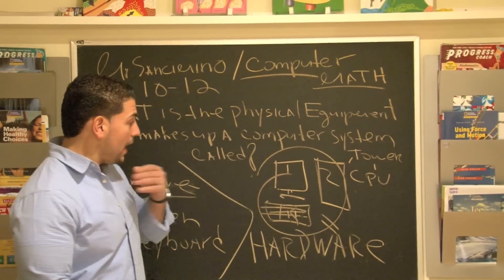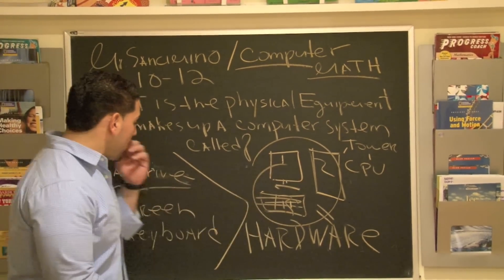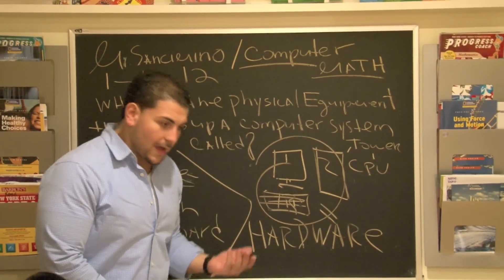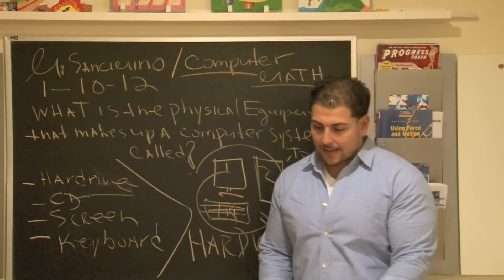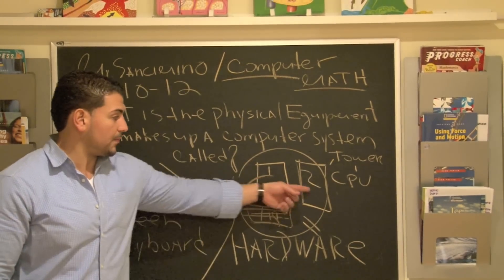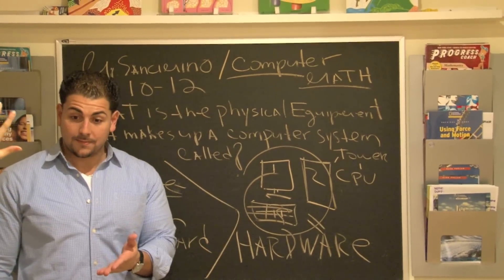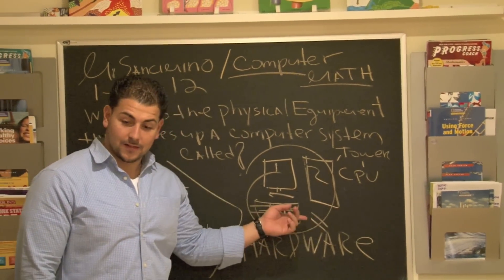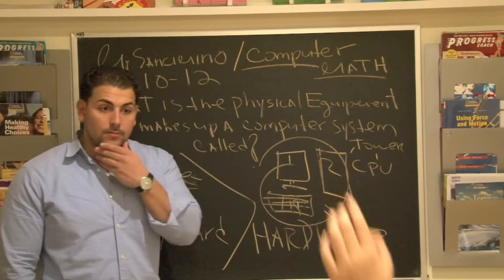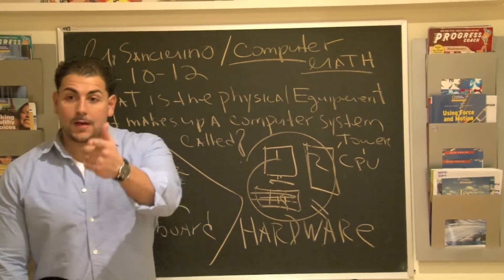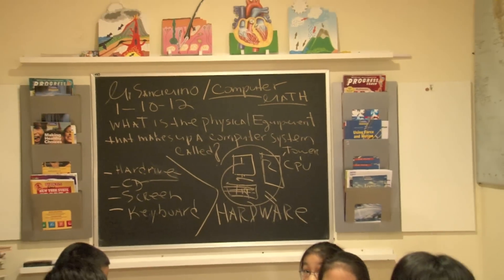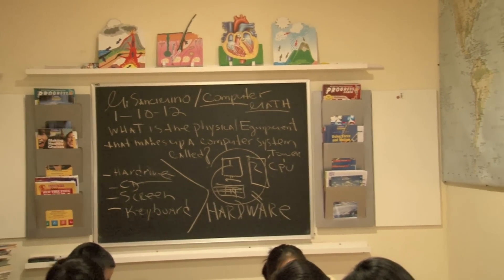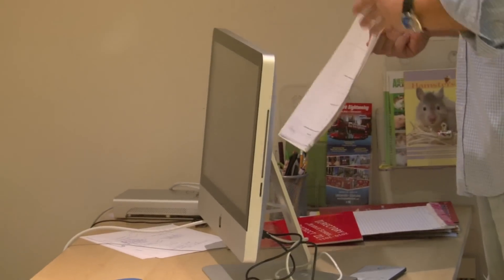So for this question: tower, screen, keyboard — all these things make up the hardware. If you take a computer math class and take a test, they may ask you a question like that. Now, how many of us own computers that look like this? Some of you still have a tower. But look at the Apple one over here — does it have a tower? No. All the guts are inside the screen. This is a more advanced version.